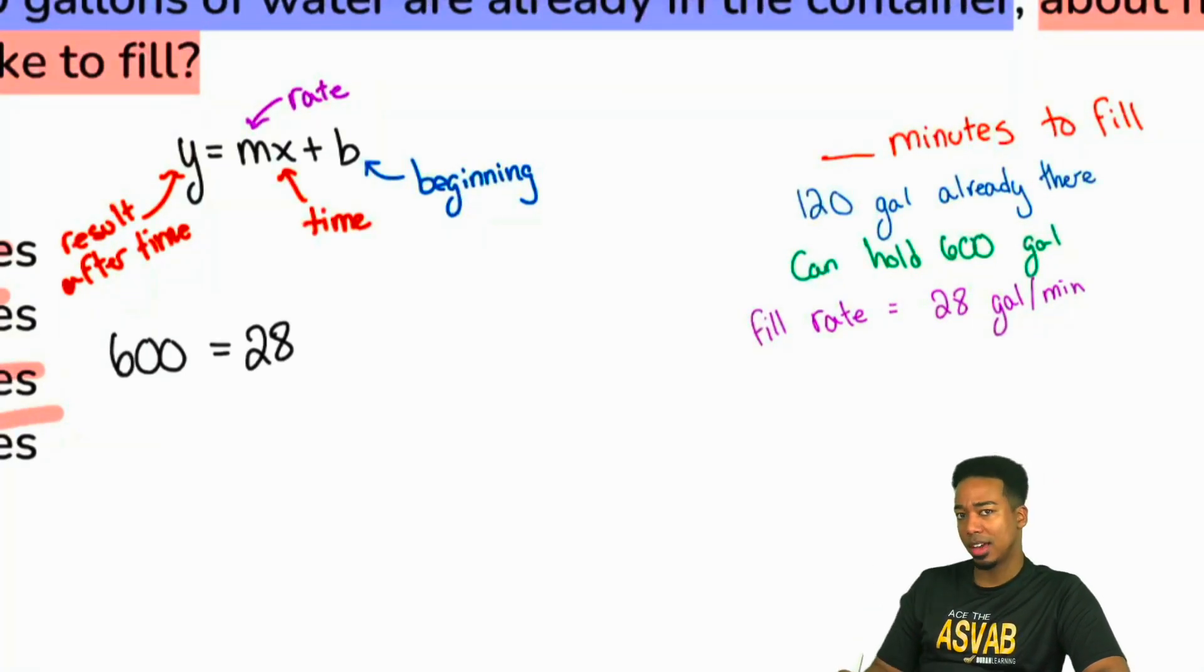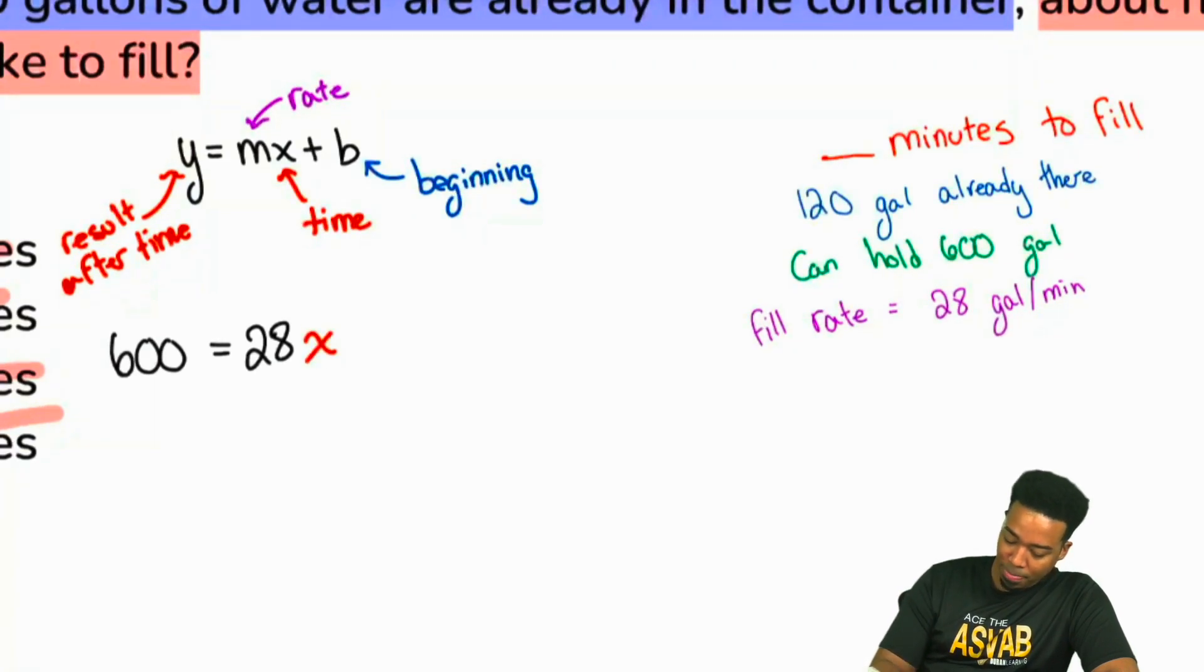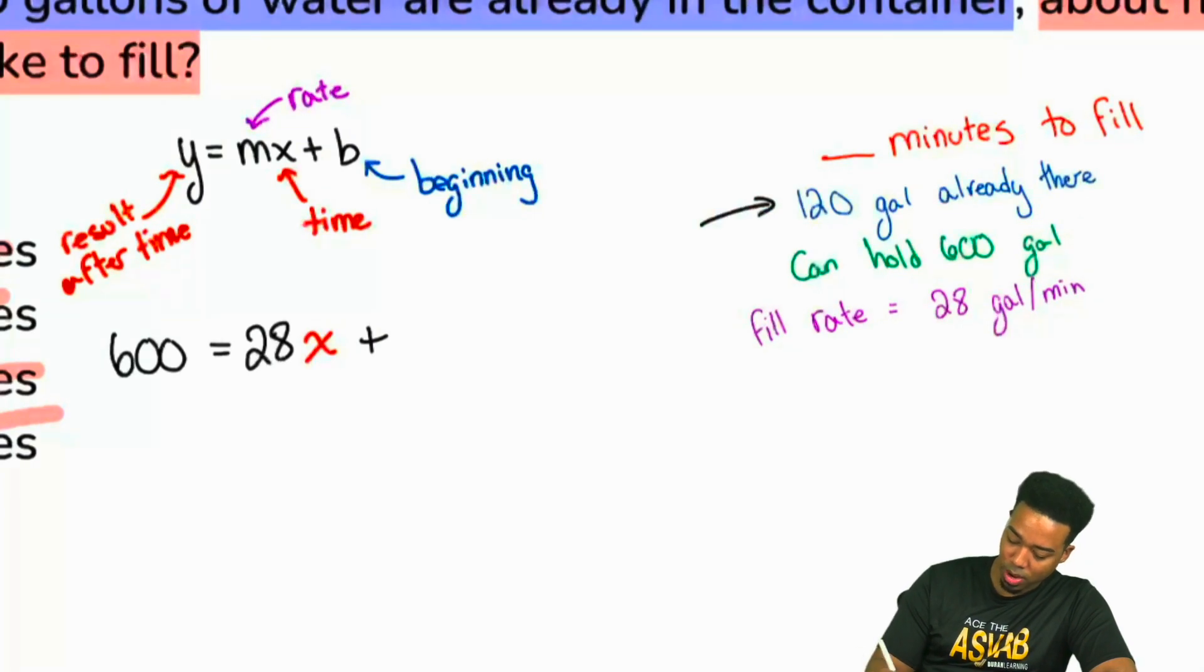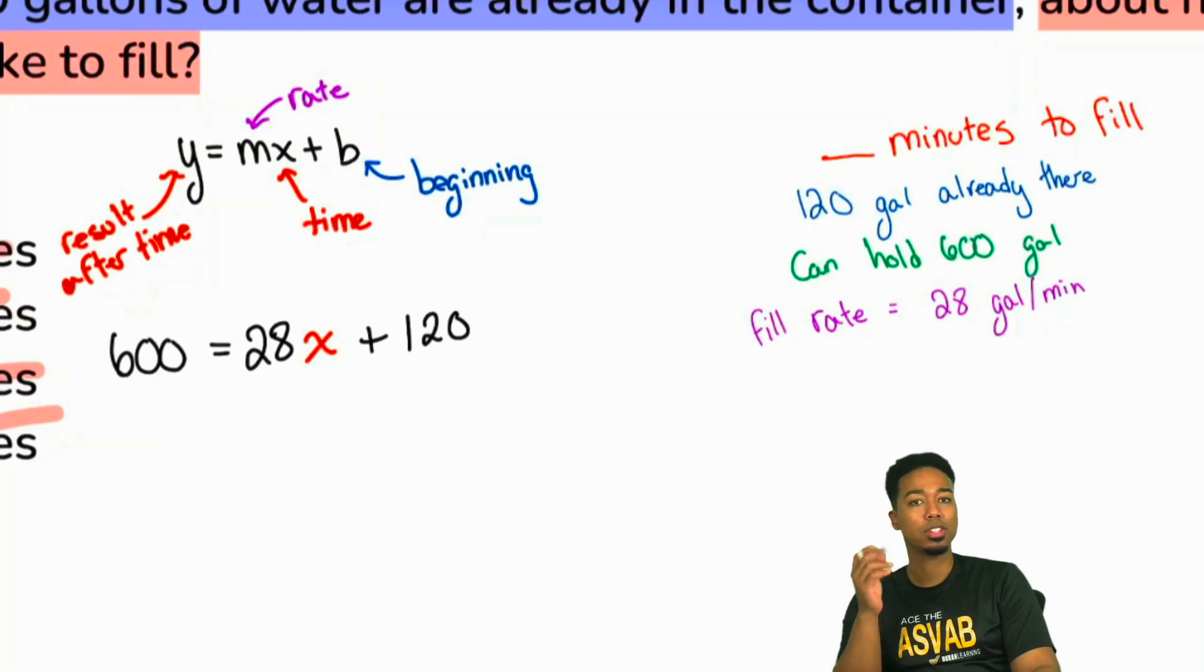So next up everyone, do we have a rate that this container is being filled up at? What's that rate again? Yeah, that's going to be 28, 28 gallons per minute. And then we have the amount of time. Everyone, do we have the amount of time? No, we don't have that. That's actually, remember, what we're looking for right over here - we're looking for the number of minutes it's going to take to fill. So we'll go ahead and write that out as X. And then we're going to add what we had in the beginning. Everyone, how many gallons did we have in the beginning? 120. Yep, right over here, it's 120. So we'll add that in and voila, we're good to go.